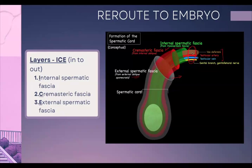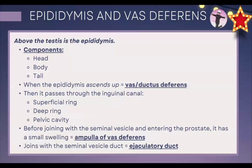Confusing these layers can result in losing very simple marks. The mnemonic is ICE — in to out: internal spermatic fascia, then cremasteric fascia, then external spermatic fascia: ICE. And that covers our embryology, testes, and spermatic cord.